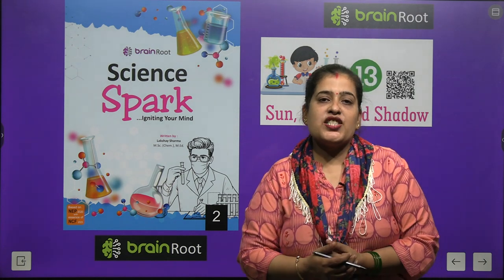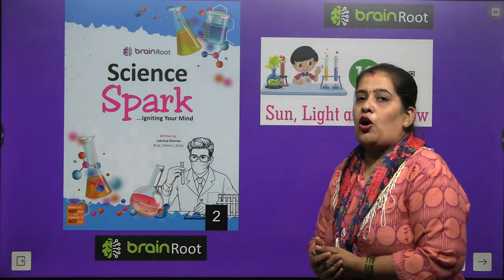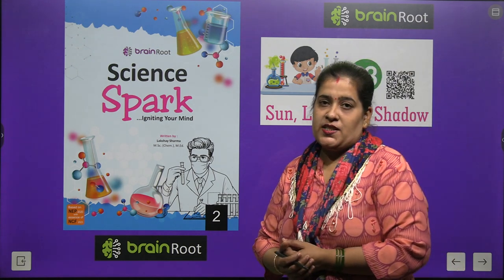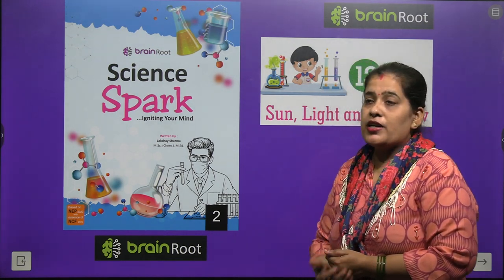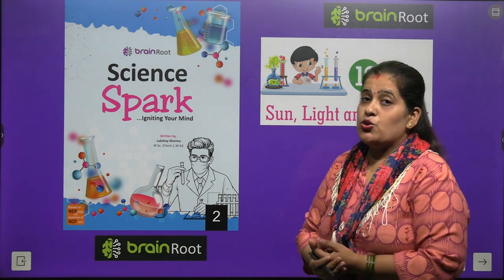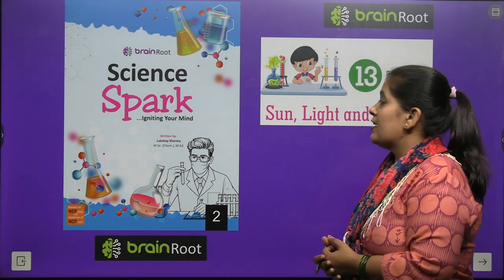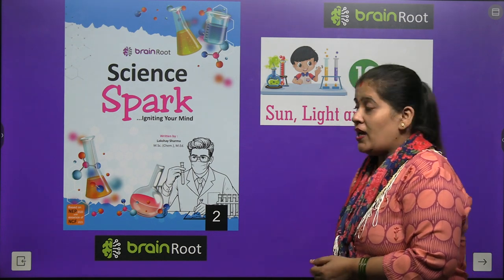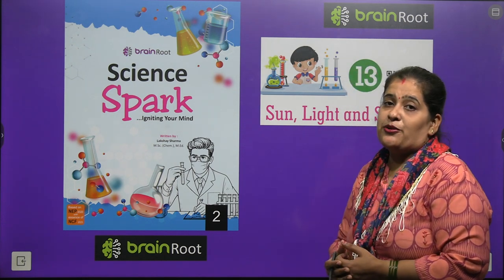Welcome back, my dear kids, with another chapter of our science book by Brain Root series. The name of our book is Science Park, Class 2. Aaj hum apna chapter number 13 read kareenge. Chapter ka naam hai: Sun, Light and Shadow.